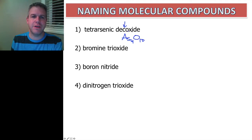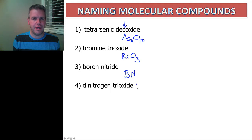Bromine trioxide is Br, there's no mono in front of it but we know that it is one, trioxide O3. Boron nitride, no prefixes at all, so it's just BN. And then dinitrogen trioxide, same thing, very simple: dinitrogen N2O3.